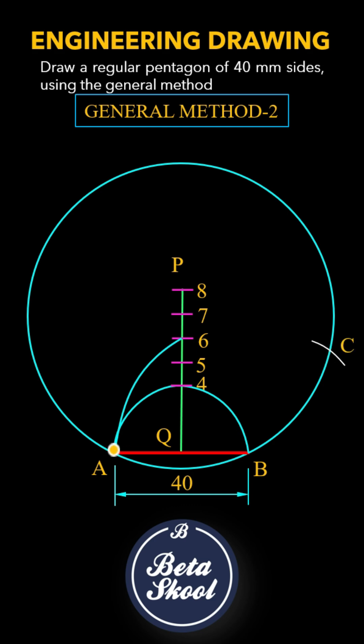From center A, cut the circle at G. From center C, cut the circle at point D. From center G, cut the circle at point F. From center D, cut the circle at point E. Now comes the magic. Connect B, C, D, E, F, G, and A.